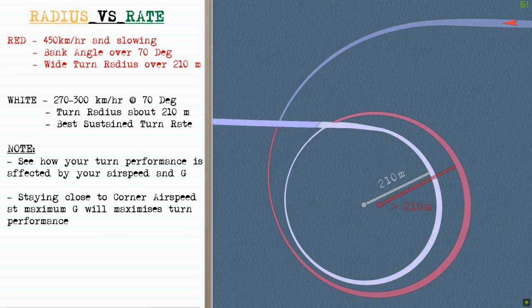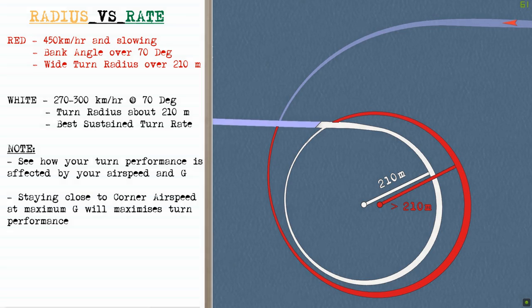As we bring up the overlay, in red we've reached around 450 km/h when slowing down with a bank angle of over 70 degrees and a turn radius of over 210 metres. As we pull into the level turn, we slow down to between 270 and 300 km/h, giving us a bank angle of around 70 degrees and a turn radius of around 210 metres at best sustained turn rate. With no altitude left to sacrifice, maintaining the same G as airspeed decreases will reduce turn radius until we reach best sustained turn airspeed for the best turn rate and smallest turn radius.